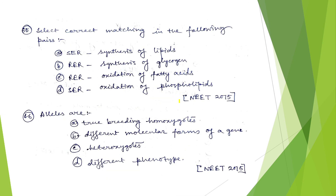The next question: select the correct matching pair. Option A says smooth endoplasmic reticulum — synthesis of lipids. Yes, lipids are synthesized in the smooth endoplasmic reticulum, so the correct answer is option A. The last question: alleles are different molecular forms of a gene. For example, capital T and small t are alleles of each other — the same gene but with different molecular forms. So the correct answer is option B.